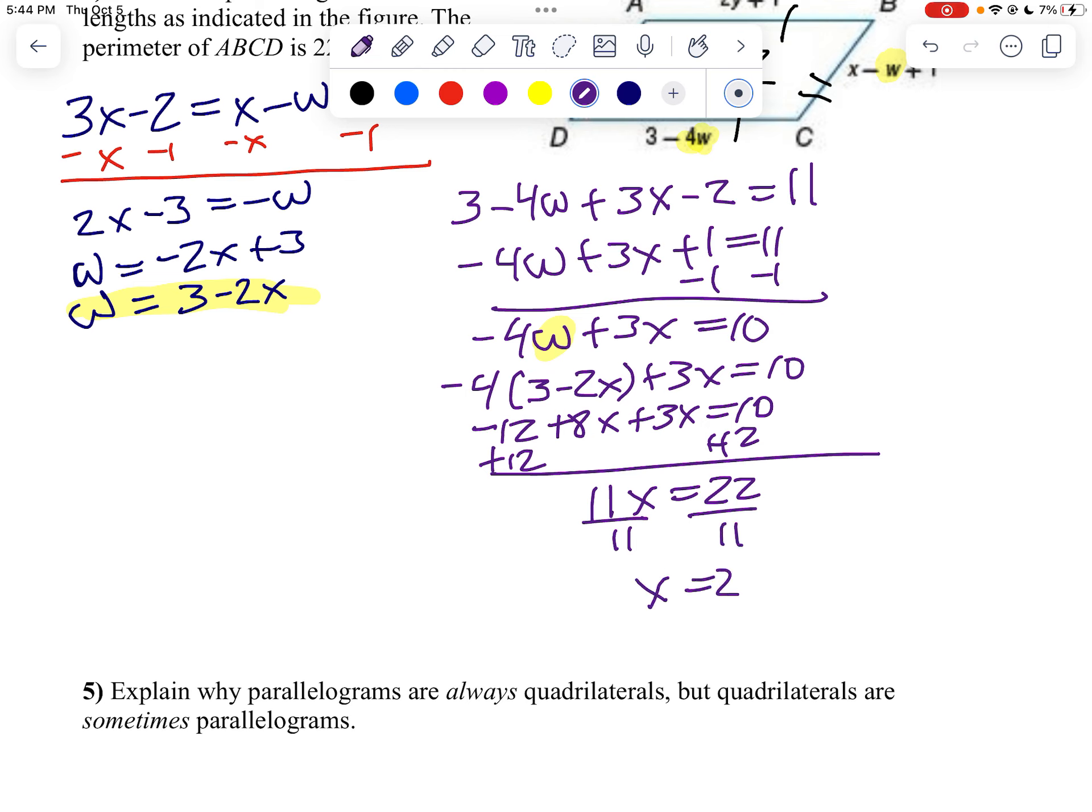Well, if x equals 2, then I can go over here and find the value of w. So w is going to be 3 minus 2 times 2. 3 minus 4, w equals negative 1. Now, I can use that fact to find the length of DC or CD. Since CD is 3 minus 4w, 3 minus 4 times negative 1 would be 3 plus 4, which is 7.